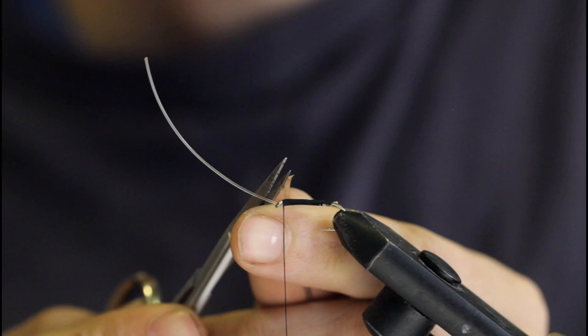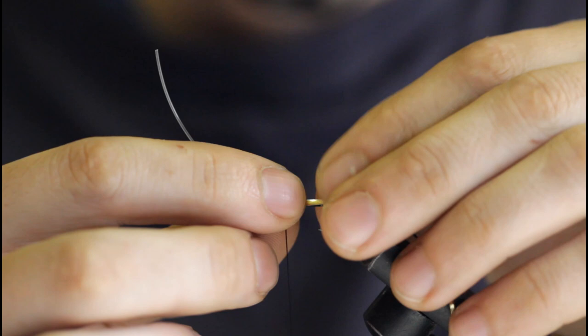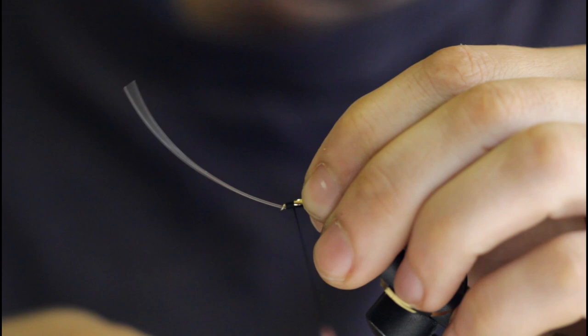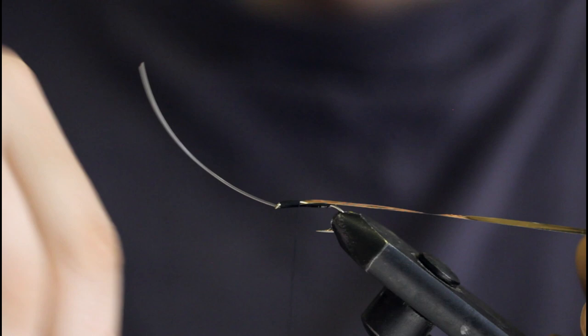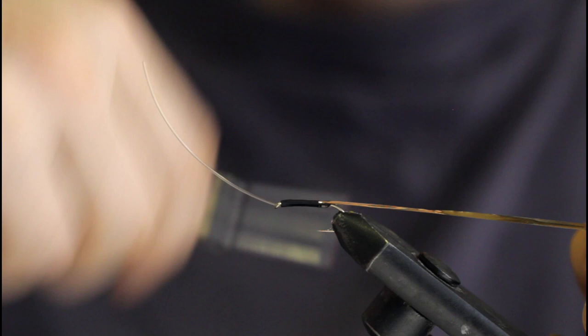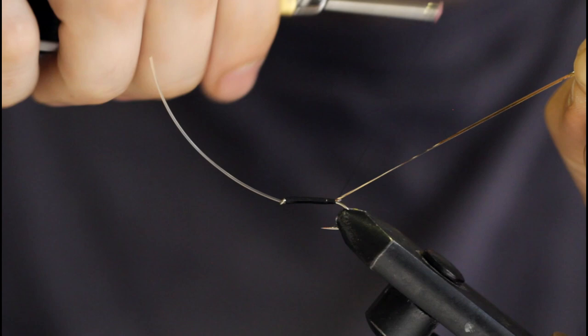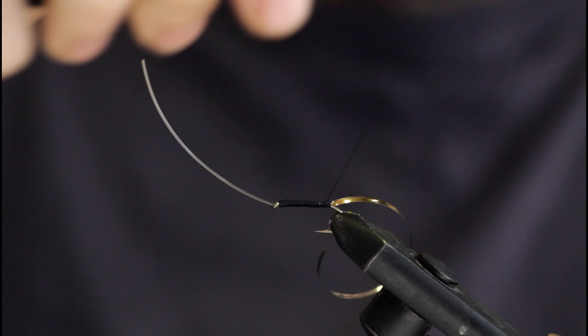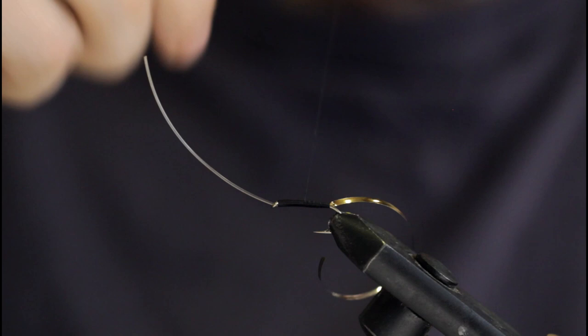Once you get to the hook eye you can grab a piece of silver tinsel. I've got double-sided gold silver, so I'm going to put the silver side down. Build a somewhat uniform thread base over the tinsel down to where I stopped before. Now I'm going to work my way back up applying as much pressure as possible without breaking the thread so that I can really bind that monofilament to the hook.